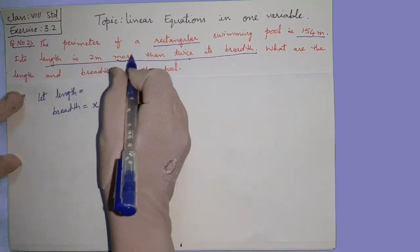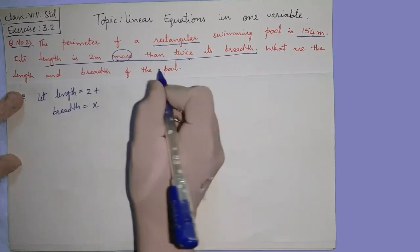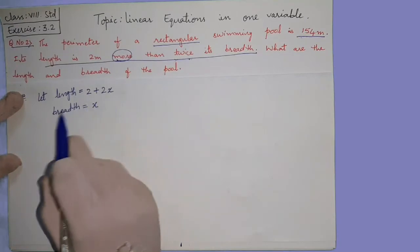2 more, more means you have to use plus. 2 more means 2 plus, twice means double, 2 into x. So 2 plus 2 into x.